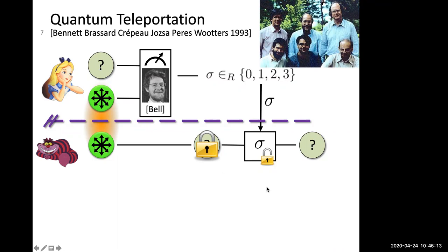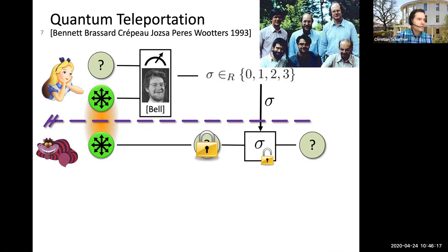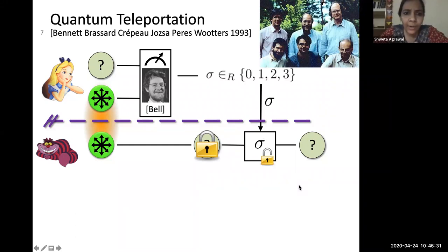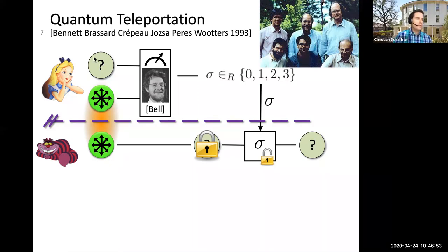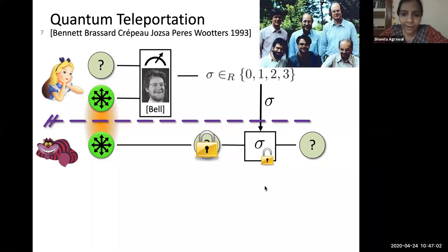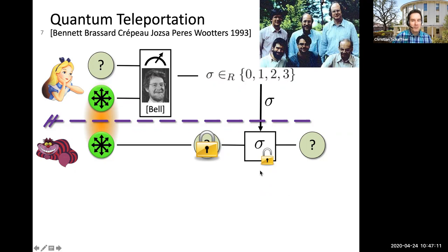The question mark is an arbitrary one-qubit state. Alice doesn't even need to know what the state is — you can be given a qubit without knowing what it is and still teleport it. This really sounds like science fiction, and even Einstein was puzzled. It looks like instantaneous communication, but it is not. Before Bob knows sigma, nothing has changed — the state on his side is just a fully mixed density matrix, identical to an encrypted qubit.